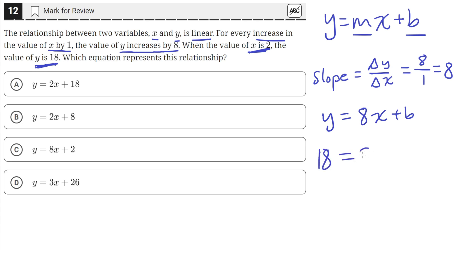So y equals 18, 8 times x will be 2, plus b. So now b is the only variable, so we can solve for it. So let's simplify the right-hand side, 8 times 2 is 16, plus b.